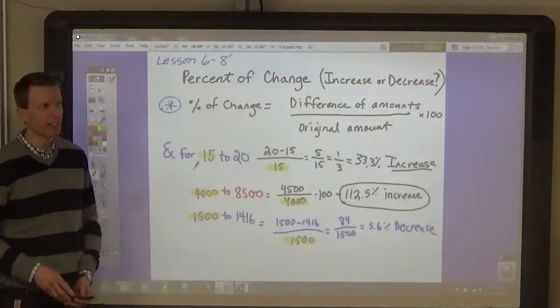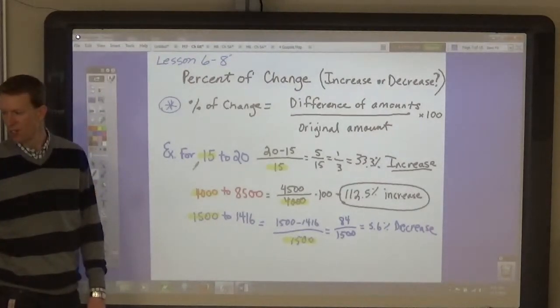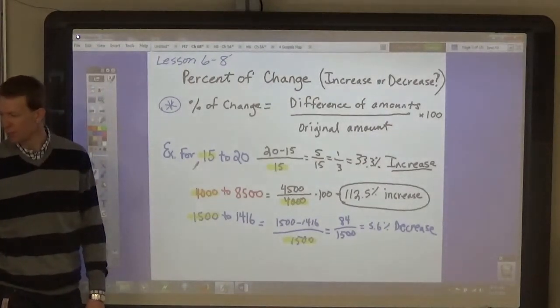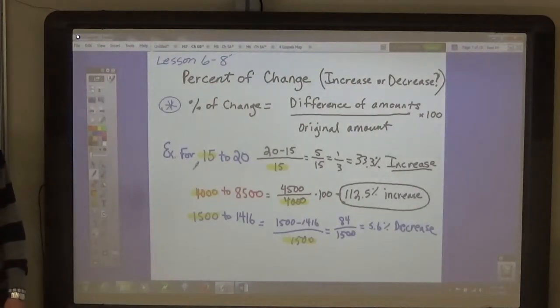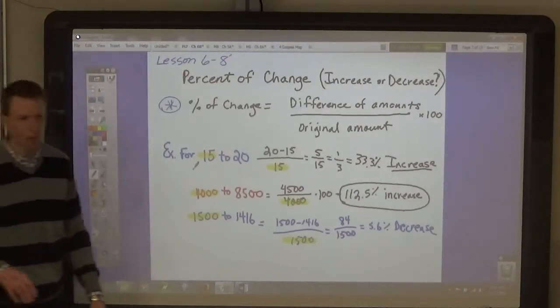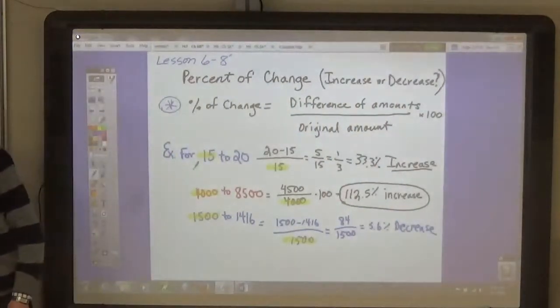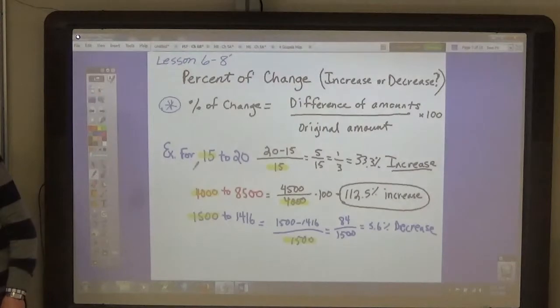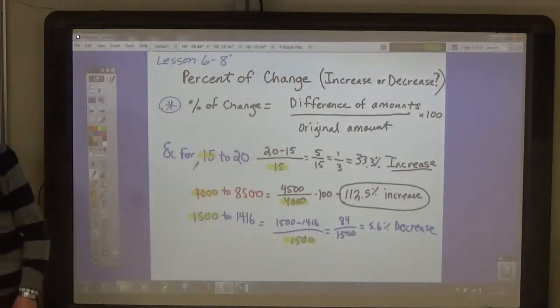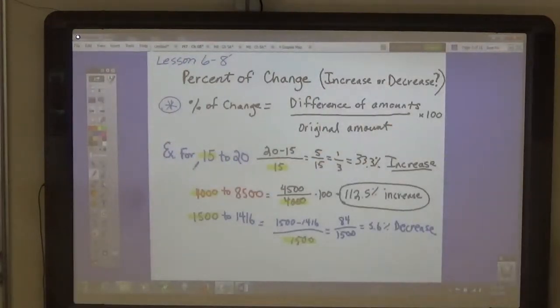And it's that simple. That's all you need to do—find the difference and divide it by the original amount. So your assignment is from page 331, and I want you to do, again, 2 to 20 evens for tomorrow. Thanks.